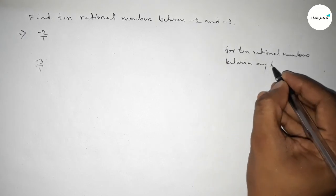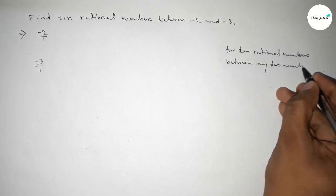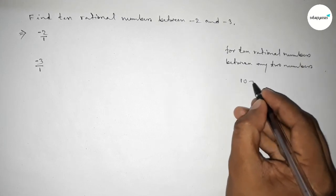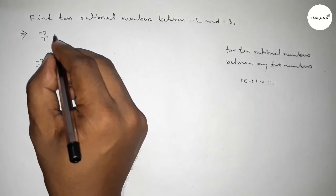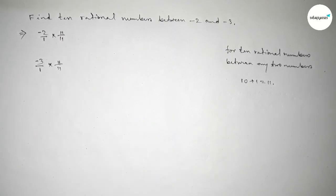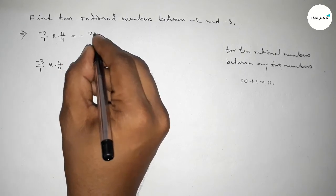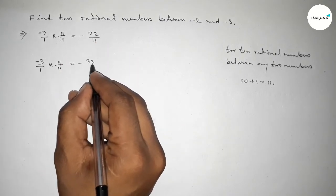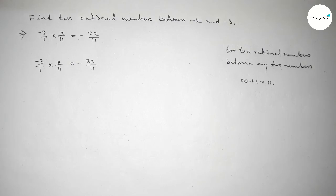So here the method is 10 plus 1 equals 11, so we should multiply both numbers by 11. By this way, equal to minus 22 over 11 and here minus 33 over 11.